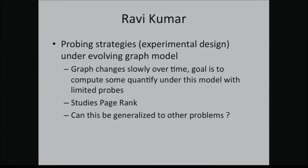Ravi investigates the PageRank algorithm under a very different assumption: what if you have a graph that changes over time but changes slowly, and you are only allowed to probe the graph a fixed, small number of times? How would you do computation in this paradigm? The question to ask after the talk is whether the techniques Ravi presents can be generalized to other settings, and whether the assumption of slowly changing graphs is applicable to other problems.